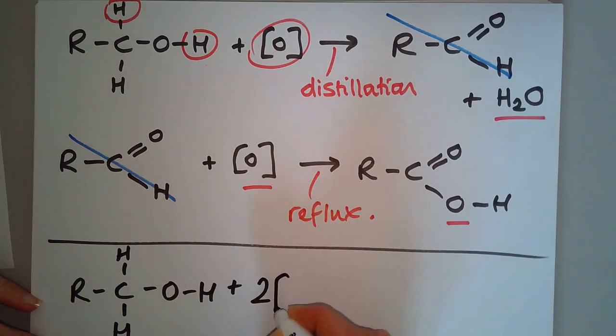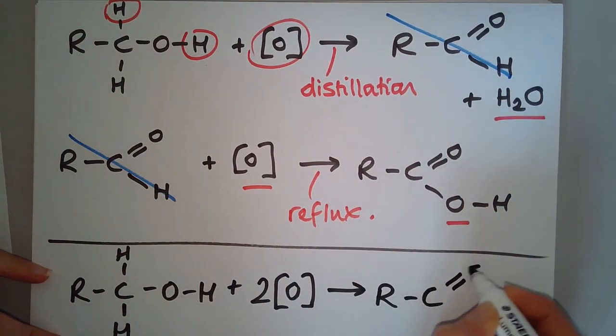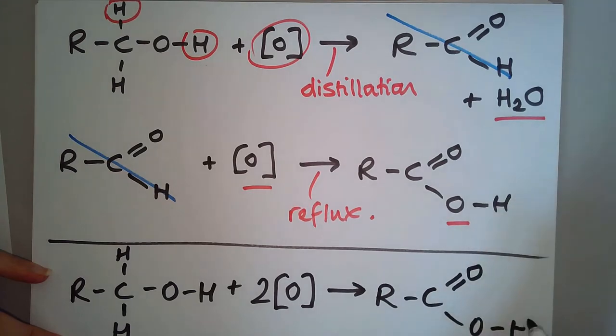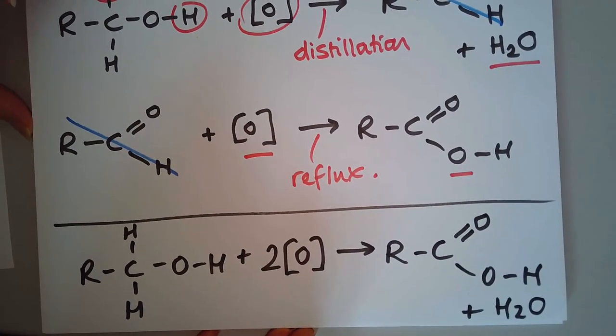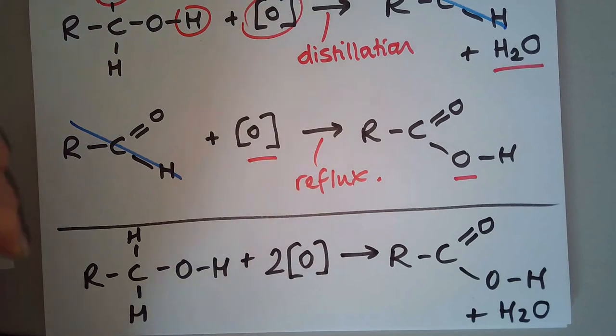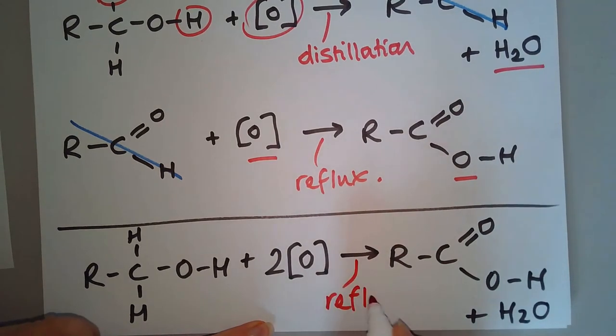We need two moles of the oxidizing agent there to give us our carboxylic acid. Don't forget the water. That will be a common mistake. Don't forget that water from that first step. That will be the complete oxidation of that primary alcohol, and you just need reflux there.